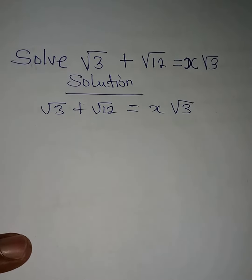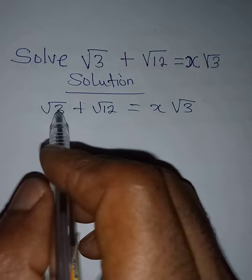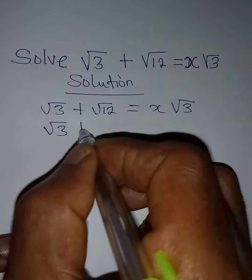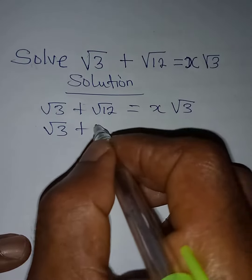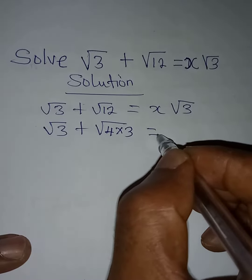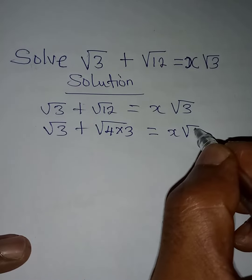What we are going to do now is evaluate the left hand side so that we have √3 plus √12. Here, √12 is the same thing as 4 times 3, and then this equals x√3.